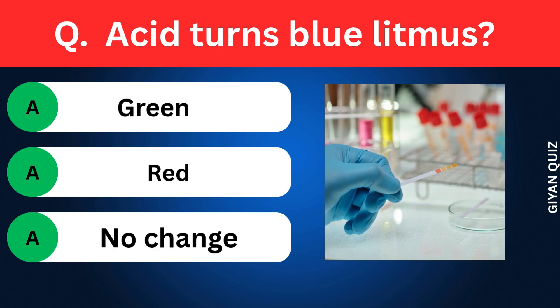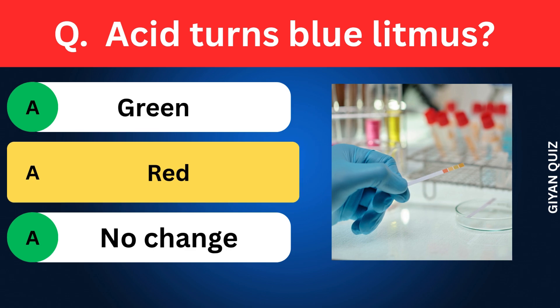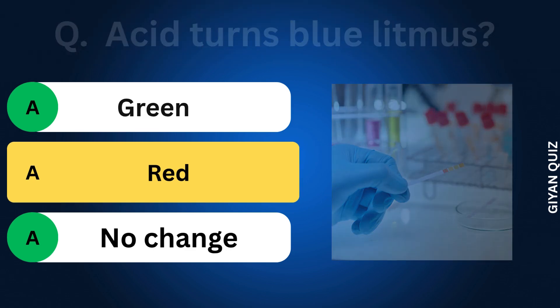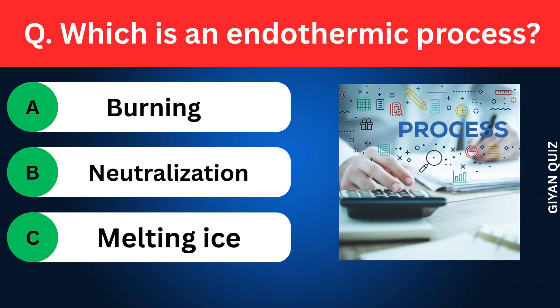Hardness of water is due to? Options: Sodium ion, Potassium ion, Calcium and magnesium ions. Correct answer: calcium and magnesium ions. Acid turns blue litmus to? Options: Green, Red, No change. Correct answer: red.